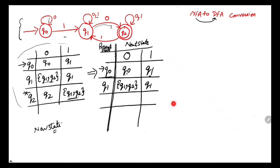For example, here we find {q1, q2} in two cells — so from one particular state with one particular input alphabet we have more than one next state. The machine would get confused: at q1 with 0, should it go to q1 or q2? To avoid such confusion, we draw a DFA. Resuming the conversion process: a new state has appeared — its name is {q1, q2}.